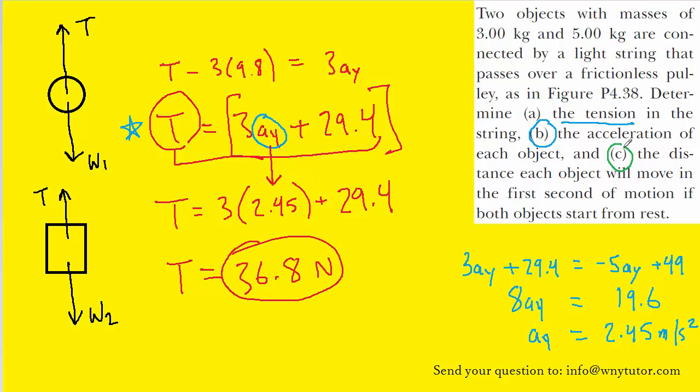For part C of the question, we are asked to calculate the distance that each object will move in one second. They kind of say the first second, but that's just one second. And it doesn't matter which object we pick. We can still calculate easily how far that object will move during the first second. So let's arbitrarily select the 3 kilogram mass, the one that's traveling upward.